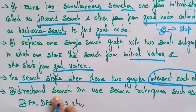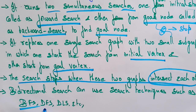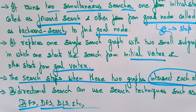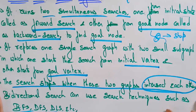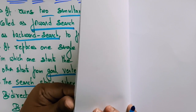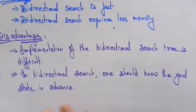The bidirectional search can use search techniques such as BFS, DFS, DLS, or others. For each subgraph, you can apply breadth-first search, depth-first search, depth-limited search, or uniform cost search. If edge weights are given, you can go for uniform cost search as well.